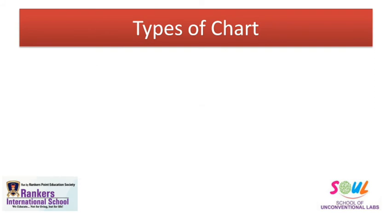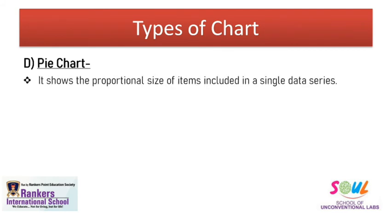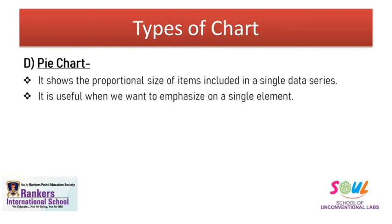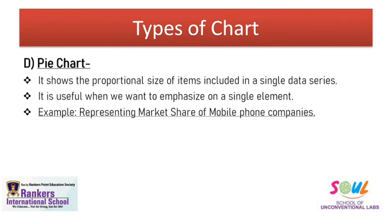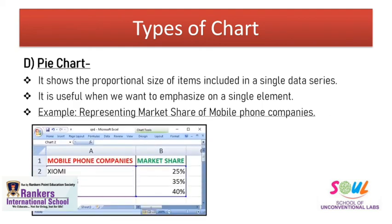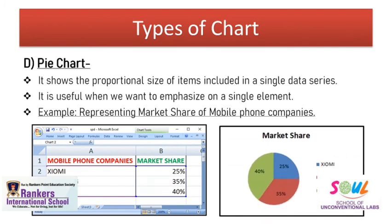The next category is pie chart. This is the most commonly used chart and the one you've seen the most. In a pie chart, your information is represented in the form of a circle. It shows the proportional size of items included in a single data series. This is very important — a pie chart is created to represent a single data series, and it is useful when we want to emphasize on a single element. For example, if we want to represent the market share of mobile phone companies, you can create a pie chart like this — from which you can easily say that Apple's market share is the highest.